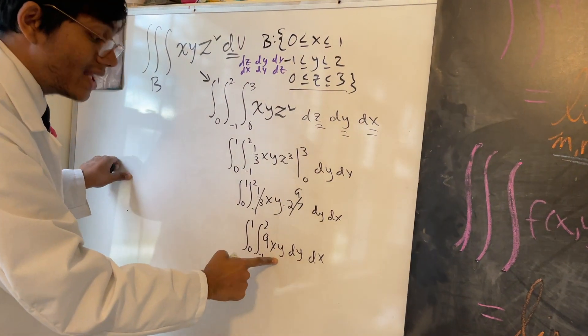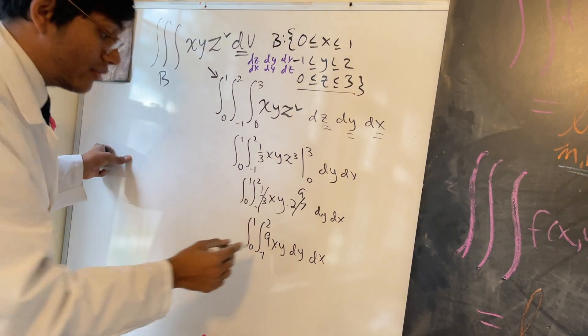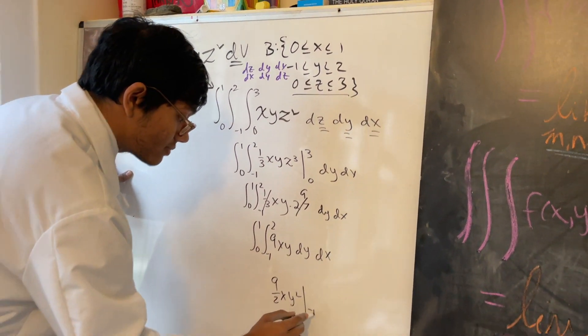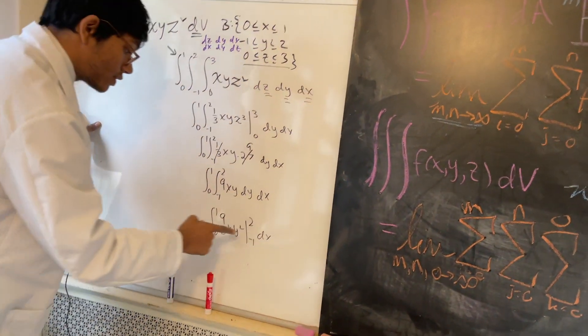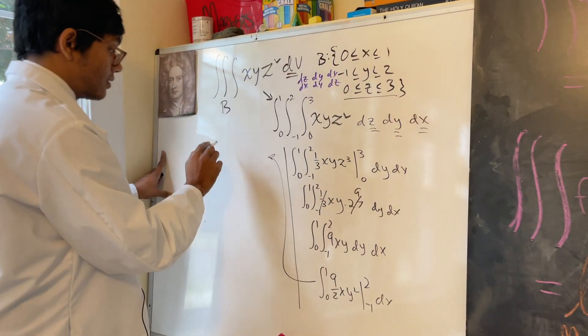If I integrate with respect to y, that means I'm holding x constant. Remember, that means taking a cross-sectional area. So I'm going to have 9/2 XY² from y=-1 to 2, dx from x=0 to 1. So what am I going to have here?